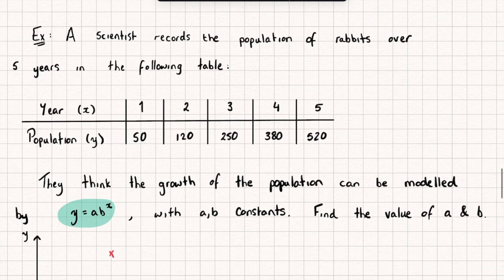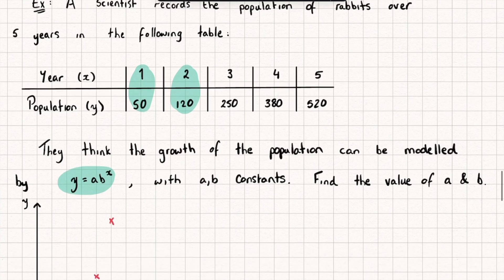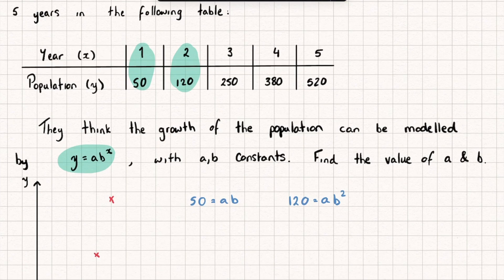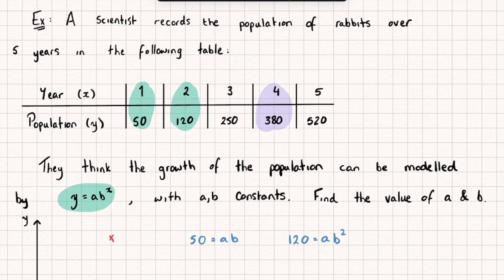One method would be to take a couple of data values from the table — for example x = 1, y = 50 and x = 2, y = 120 — and substitute those into our equation, giving 50 = a × b^1 and 120 = a × b^2, then solve simultaneously. The problem is if I instead pick x = 4, y = 380 and x = 5, y = 520 that gives a different answer for a and b, so it's not a very reliable method.